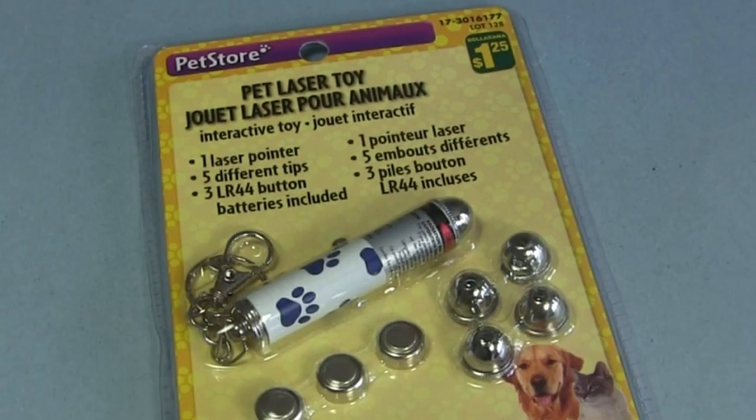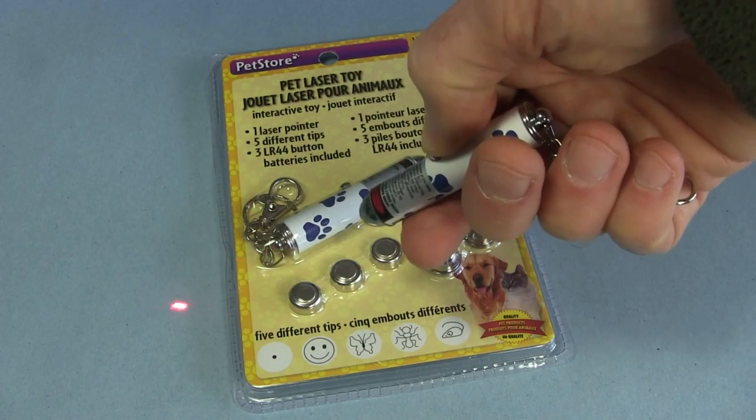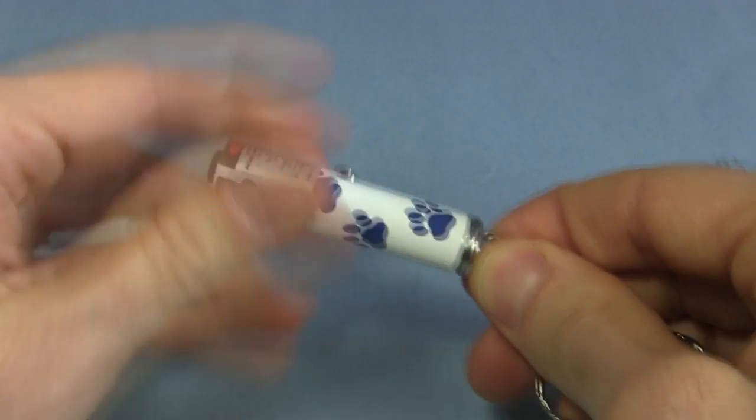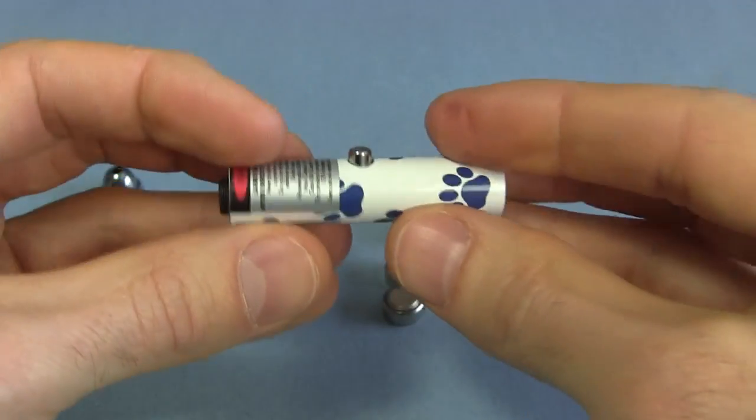The lasers I used are these very cheap ones which I bought at a dollar store. They're a simple cylinder with a switch on the side. To disassemble it I unscrew the front piece and then the back with the keychain. Inside are three batteries which I'll need later.